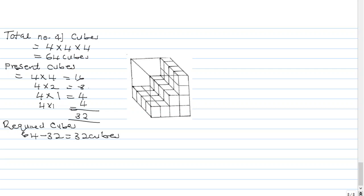After that, we have to know the present cubes that are already in the structure. We count by layers. The first layer, the bottom layer, we have 4 cubes by 4 to get 16 cubes.